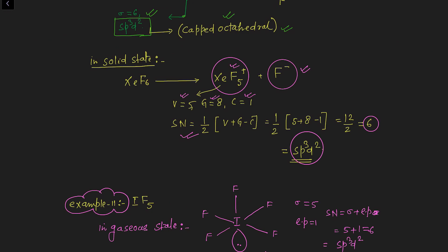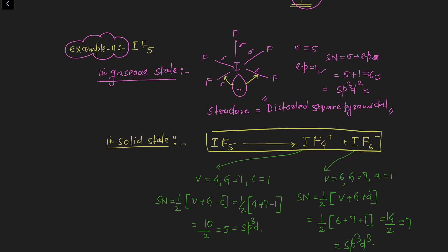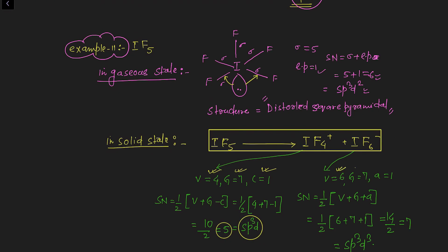Example eleven: IF5 (iodine pentafluoride). In gaseous state: five sigma bonds and one lone pair give steric number 6 and sp3d2 hybridization, but the geometry is distorted square pyramidal due to lone pair–bond pair repulsion. In solid state, IF5 consists of IF4+ and IF6−. For IF4+: monovalent atoms = 4 (fluorines), valence electrons of iodine = 7, cation charge = 1, giving steric number 5 and sp3d hybridization. For IF6−: monovalent atoms = 6, valence electrons of iodine = 7, anion charge = 1, giving steric number 7 and sp3d3 hybridization.